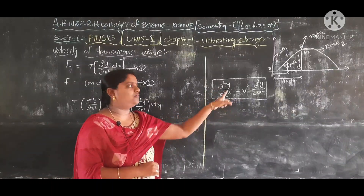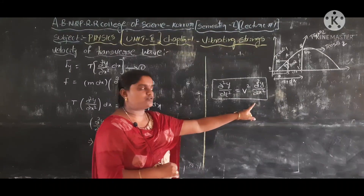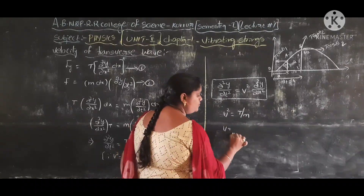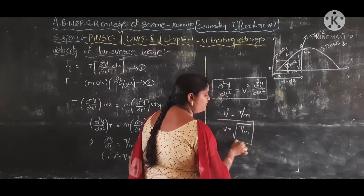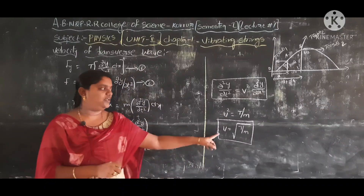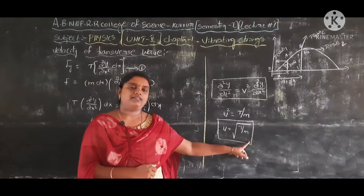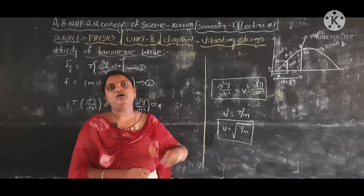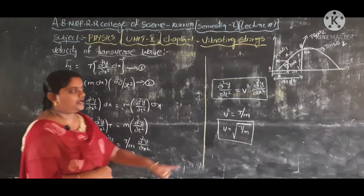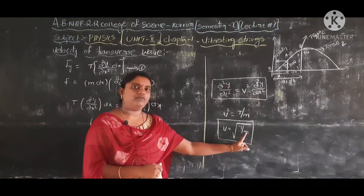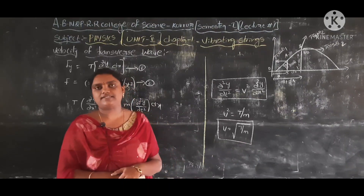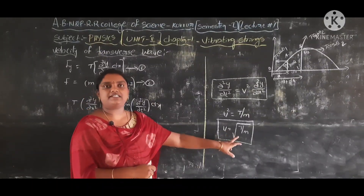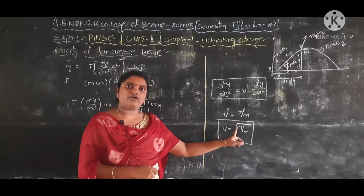The standard wave equation is ∂²y/∂t² = v²·(∂²y/∂x²). Comparing, we get v² = T/m, therefore v = √(T/m). This is the velocity of the transverse wave along a stretched string. Here v is directly proportional to √T (tension) and inversely proportional to √m (linear mass density, i.e., mass per unit length).